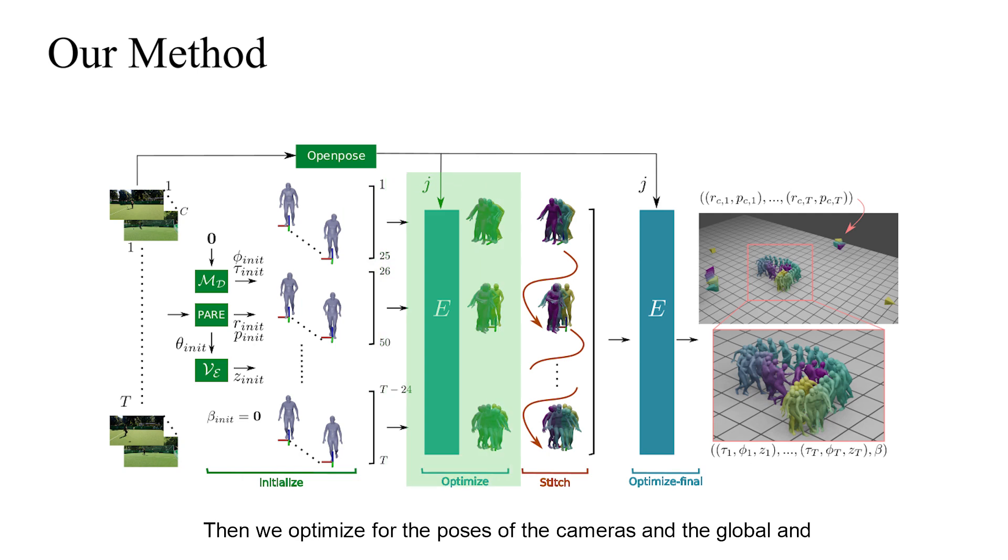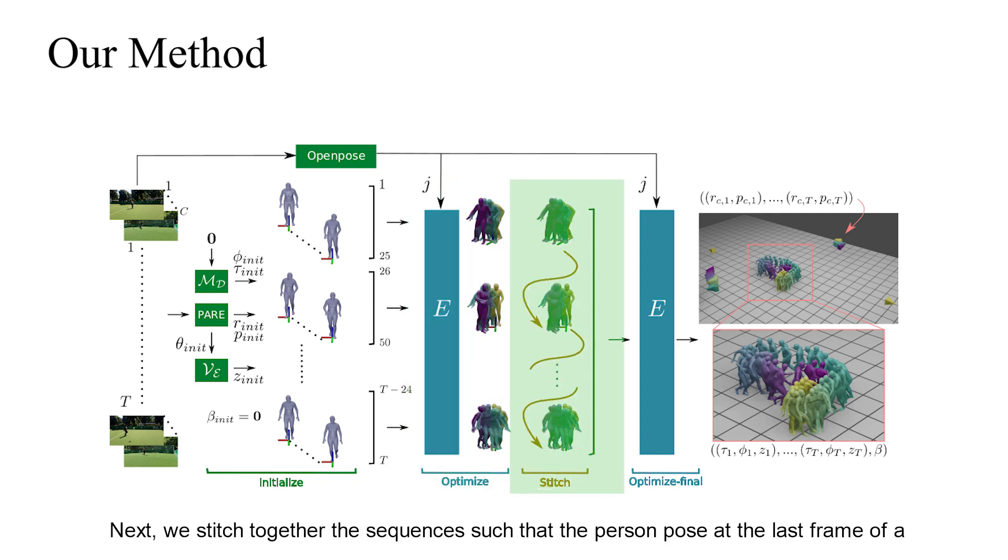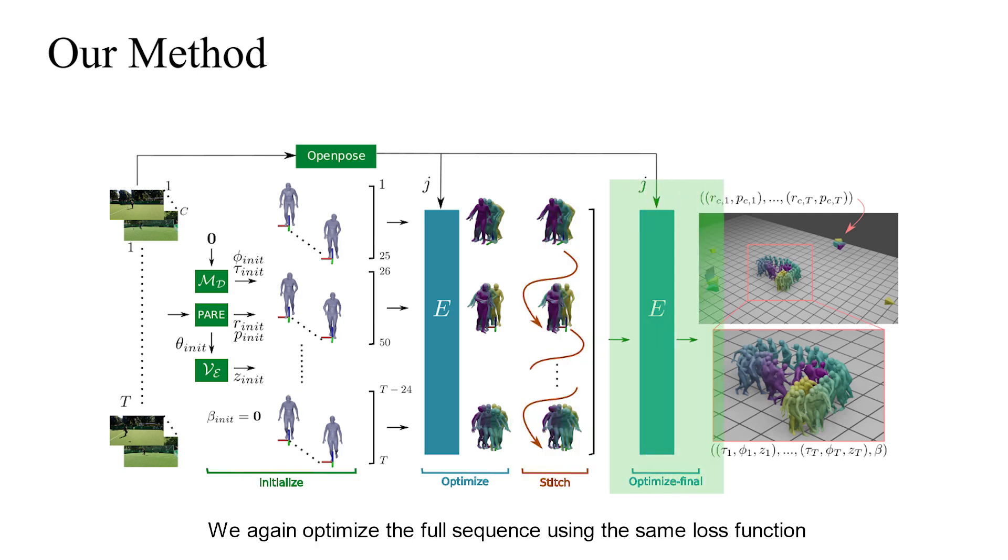Then we optimize for the poses of the cameras and the global and articulated poses of the person in chunks of 25 frames. Next, we stitch together the sequences such that the person pose at the last frame of a chunk is aligned with the pose of the first frame of the next chunk. We again optimize the full sequence using the same loss function to get the final estimate of the camera and person's poses.